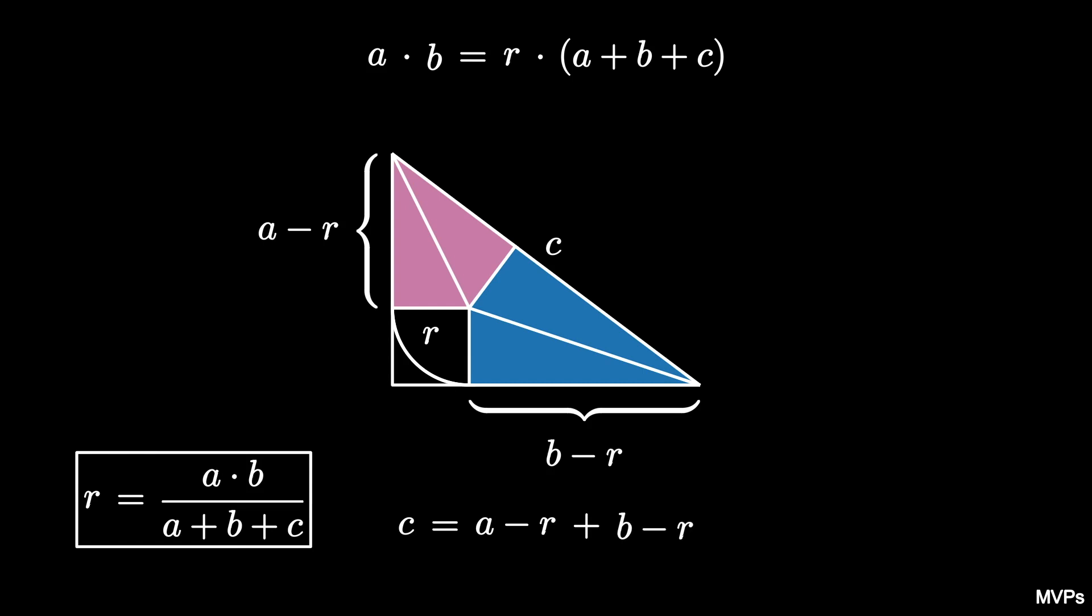We can again use this equation to solve for R, and we'll see that R is equal to A plus B minus C all divided by 2.